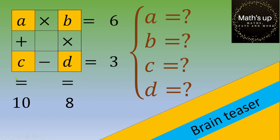And on the left, you've got the relationship between all these values. A times B equals 6, A plus C equals 10, B times D equals 8, and C minus D equals 3.